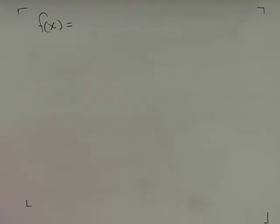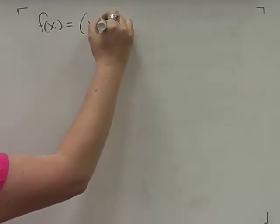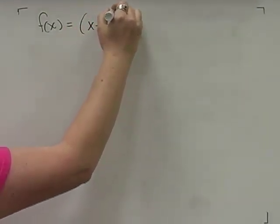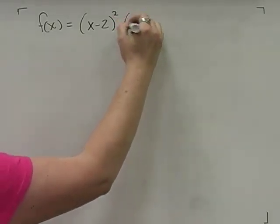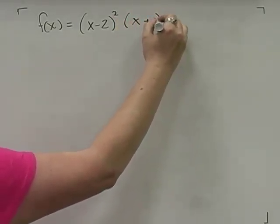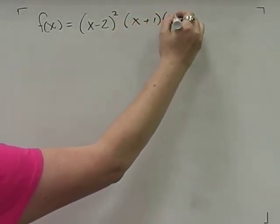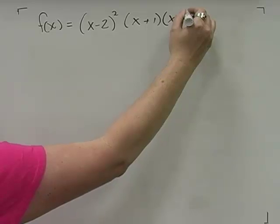This is Trace Adams and we're going to be doing the second example for graphing polynomial functions. The second example is going to be x minus 2 squared, times x plus 1, times x minus 1.